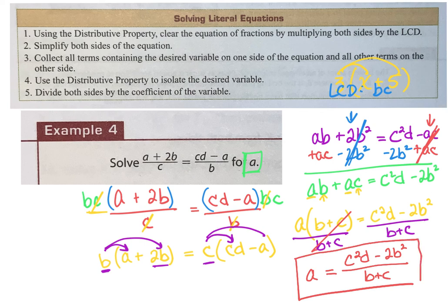Don't let the fact that this is all variables throw you. You are simply taking it one step at a time to simplify and get what you want by itself. Normally you're getting X by itself with numbers — now you're getting a variable by itself with just variables. You have to ask: are they like terms? If not, leave them alone. If you have two of the same variable, use distribution to pull it out and then divide that group over.